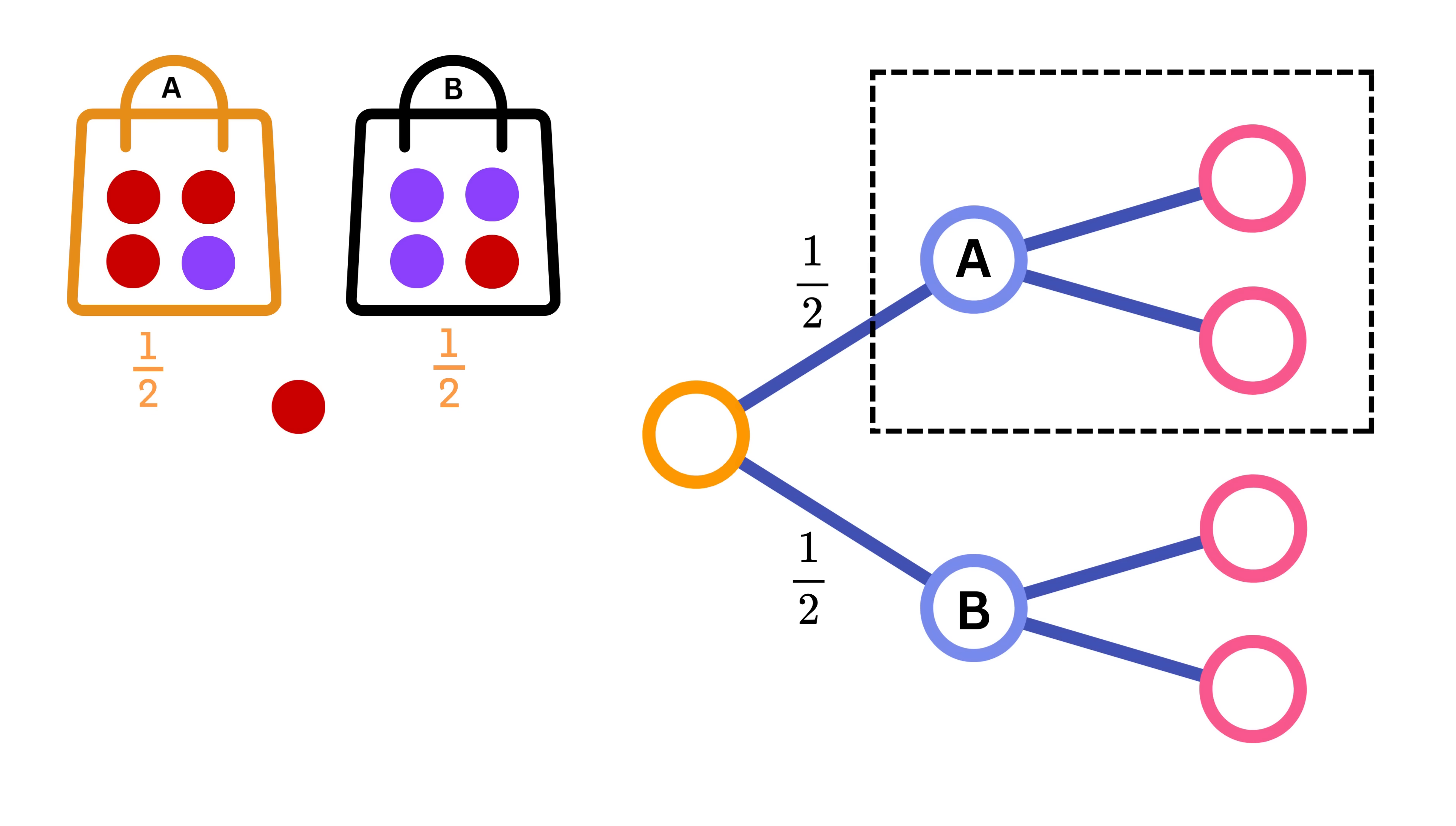Now, from the bag A branch, draw another two small branches like this, one labeled red with probability 3/4, and the other labeled blue with probability 1/4, because bag A has three red balls and one blue ball. Then, from the bag B branch, draw two small branches, one labeled red with probability 1/4, and the other labeled blue with probability 3/4, because bag B has one red ball and three blue balls.